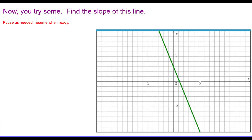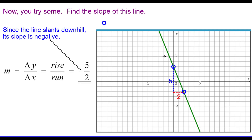Now you try some. Find the slope of this line. The line slants downhill, so its slope is negative. The answer is negative 5 over 2, or negative 5 halves.